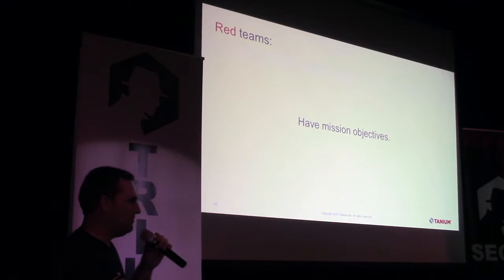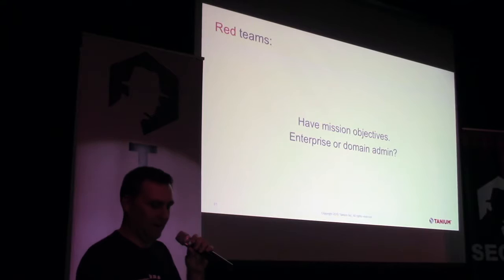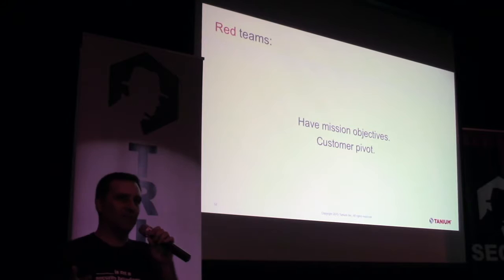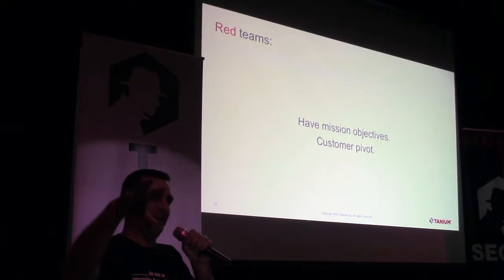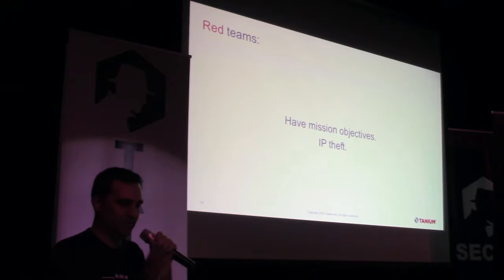Red teams have mission objectives. Some people think the objective is enterprise domain admin, but that's actually a means to an end, not the end itself. Ultimately they want to do something like a customer pivot — for an online service with a customer portal, if they can get from one customer's stuff to another customer's stuff, that's a customer pivot. That's the kind of thing we looked for all the time at O365. IP exfiltration is another fairly common red team objective.